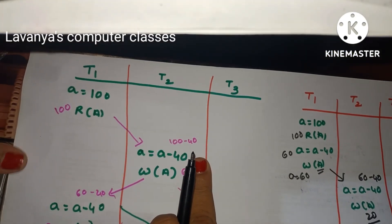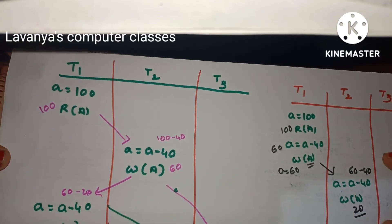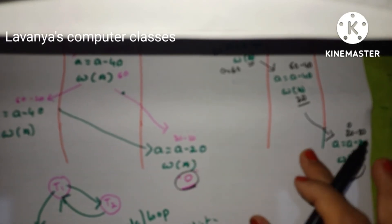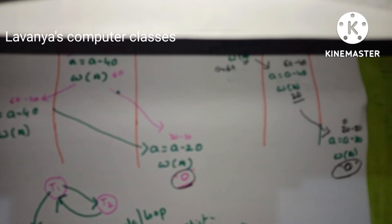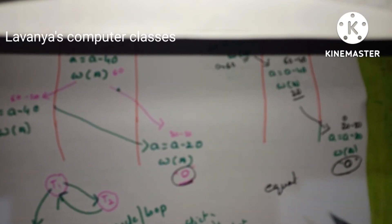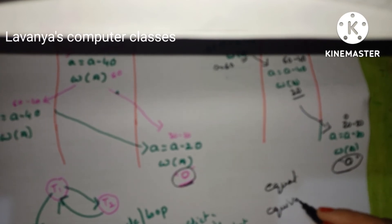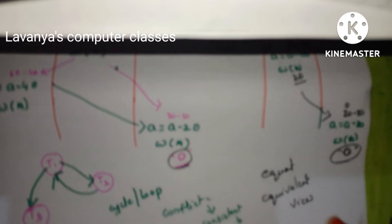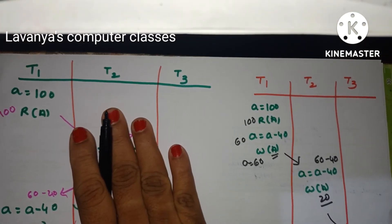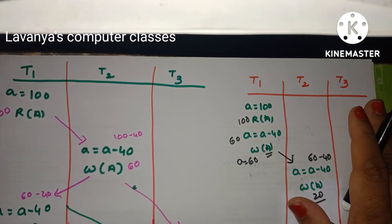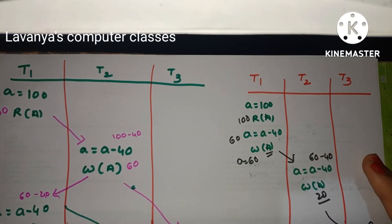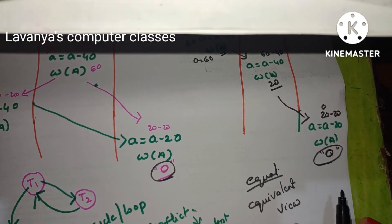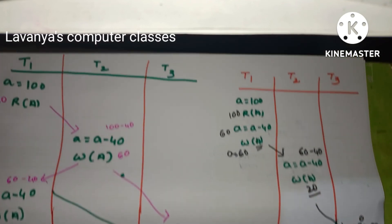The serial schedule gives a final answer of 0. The non-serial schedule, executing the same transactions in parallel, also gives a final answer of 0. These two schedules are not equal but they are equivalent — view equivalent. So this non-serial schedule is view equivalent to the serial schedule, and this is called view serializability.